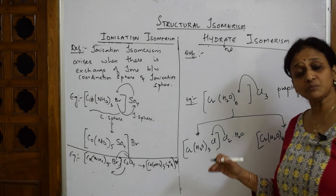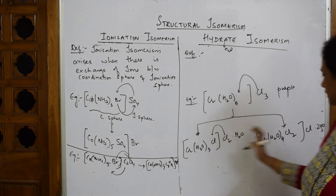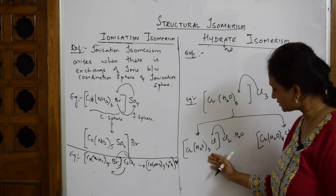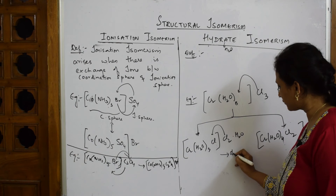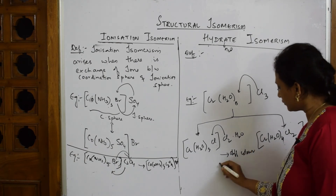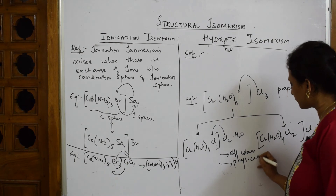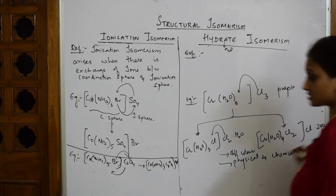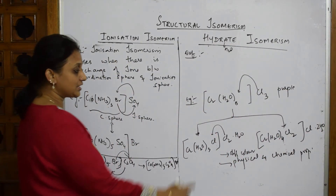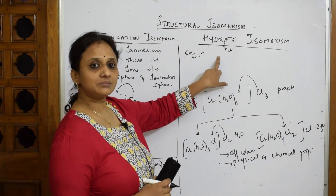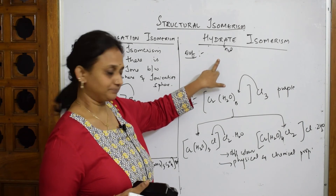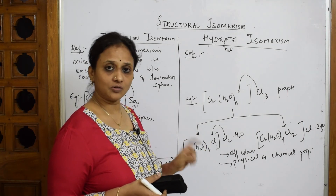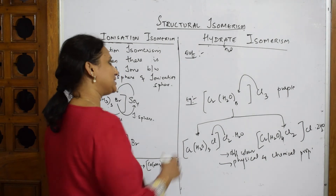These complexes have the same molecular formula but different arrangement of structures — these are hydrate isomers. The important point is that each isomer will have a different color. Both physical and chemical properties will be different. If the exam asks for the importance of hydrate isomerism, write that the isomers differ in physical and chemical properties.